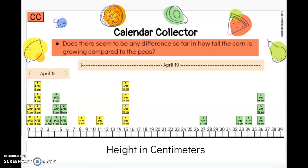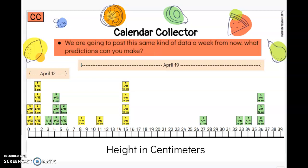Does there seem to be any difference so far in how tall the corn is growing compared to the peas? Show a connection if you still think the peas are growing faster. It looks like that is still happening — what we thought about last time. We're going to post this same kind of data again a week from now. Can you make any predictions about what it will look like? Maybe you think the peas will continue to grow faster, or maybe you think things will start slowing down. We'll find out next time, mathematicians. Time to jump into Seesaw and show your teacher what you know.